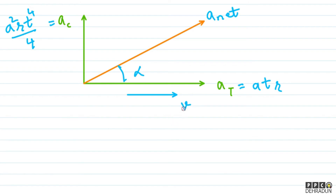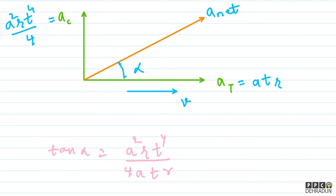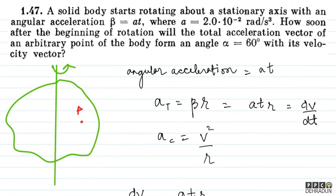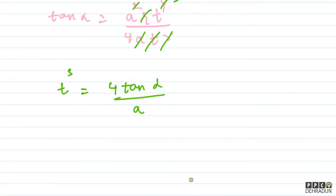The velocity vector is along the tangential acceleration direction — that is why speed keeps increasing. So we can write: tan α = a_centripetal / a_tangential = (a²Rt⁴/4) / (a·t·R). Here R cancels with R, and one factor of t cancels, leaving t³. One factor of a also cancels, giving us t³ = 4 tan α / a.